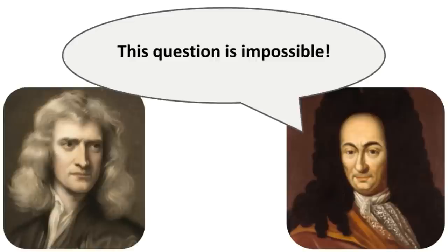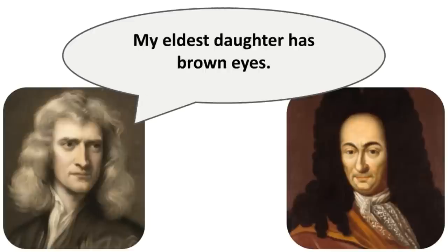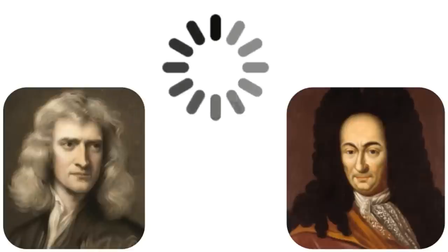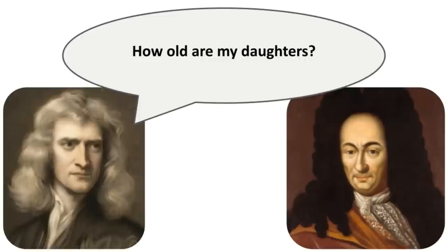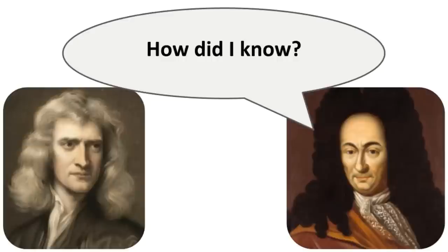So the first mathematician says, okay, I'll give you a clue. My eldest daughter has got brown eyes. The second mathematician thinks for another few minutes, and then says, okay, now I know how old your three daughters are. The question we would like to answer is how old are the three daughters, and how did the second mathematician know?